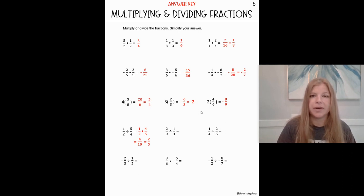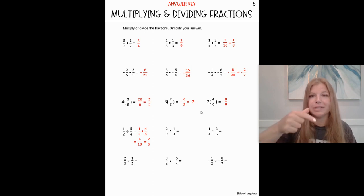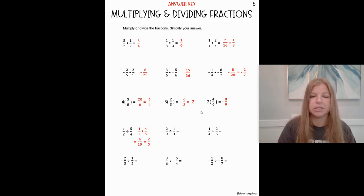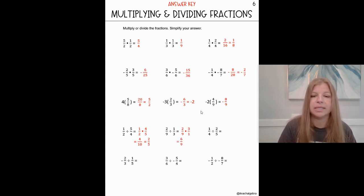Next one: two ninths divided by one third. We take the first fraction and multiply it by the reciprocal of the second fraction. The reciprocal of one third is three over one, which is really just three. Two ninths times three over one ends up giving us six ninths. Six ninths can be simplified by three, and our final result is two thirds.